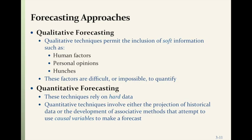There are two forecasting approaches. Qualitative forecasting includes soft information such as human factors, personal opinions, and hunches — factors that are difficult or impossible to quantify. Quantitative forecasting relies on hard data. Quantitative techniques involve either the projection of historical data or the development of associative methods that attempt to use causal variables to make a forecast.